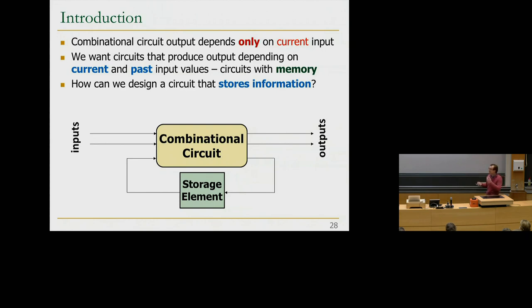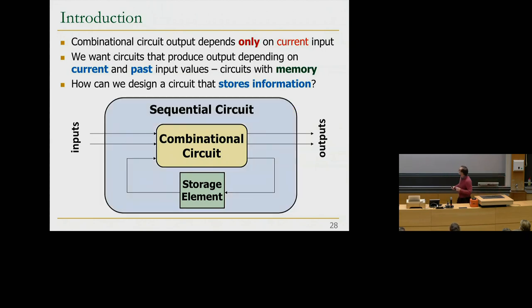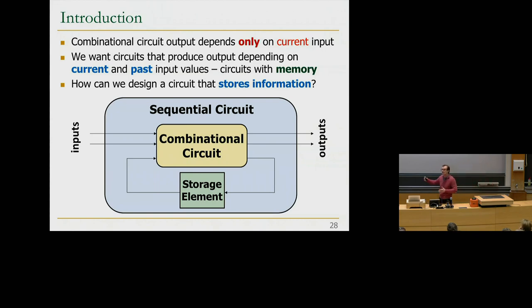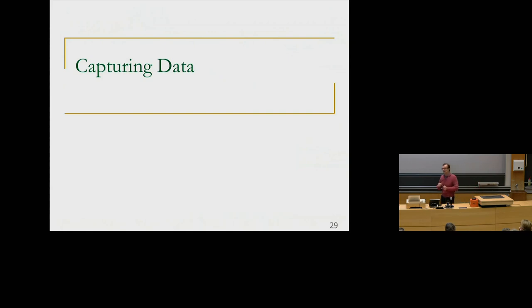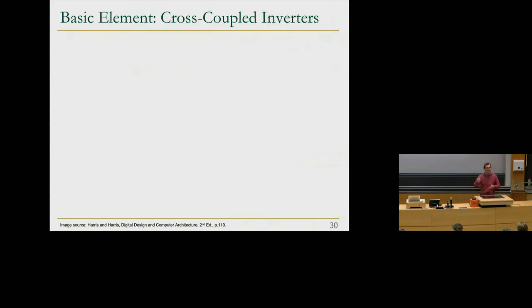How can we design a circuit that stores information? This is called a sequential circuit — it's the combinational circuit plus the storage element. There are usually no sequential circuits with just storage elements, because you need something combinational to access the storage element. To capture data, we can look at how humans store information — writing to paper, etching on rocks — and we need a digital equivalent.